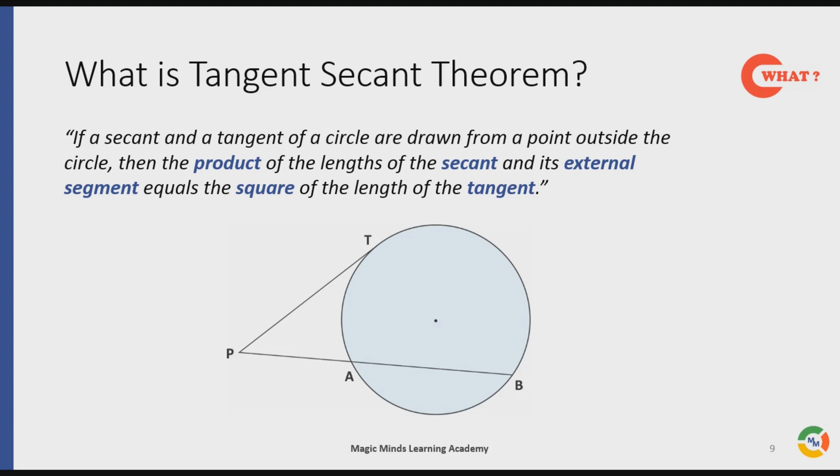So the theorem says that the product of the secant—that is the entire length PAB or PB—and its external segment, that is the portion of the secant which lies outside the circle, which is the length PA, equals the square of the length of the tangent.